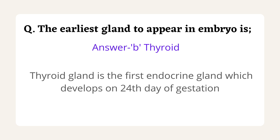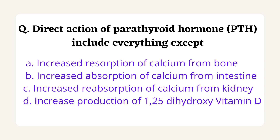The next question is: the direct action of parathyroid hormone includes everything except — options are increased reabsorption of calcium from bone, increased absorption of calcium from intestine, increased reabsorption of calcium from kidney, and increased production of 1,25-dihydroxy vitamin D. This question was asked in JIPMER Steno Exam 2013. This is a negative question.